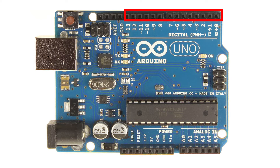You may have noticed the tilde (~) symbol next to some of the digital pins. These pins can be used as normal pins, but can also be used for something called pulse width modulation, which we will discuss in a later tutorial.